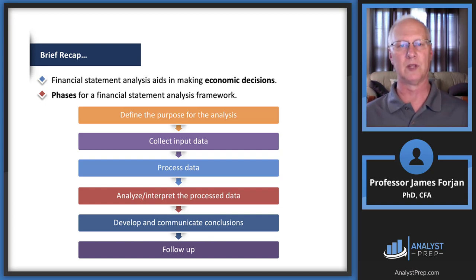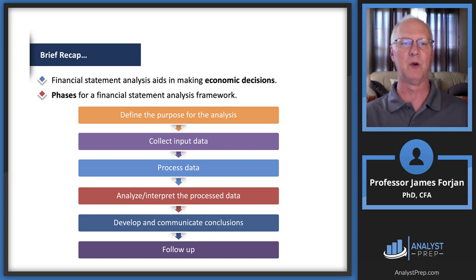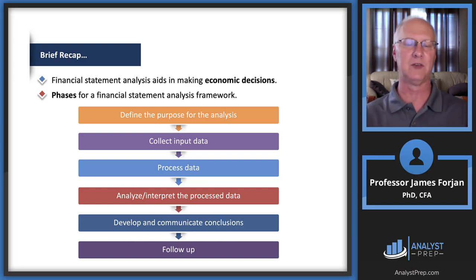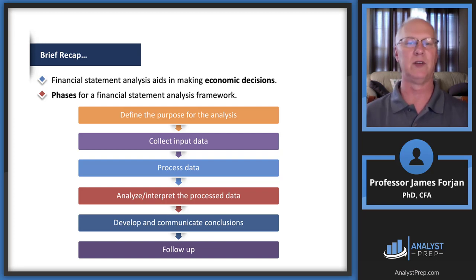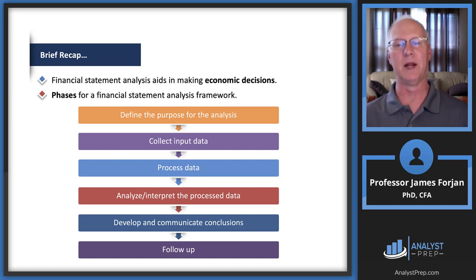We need to worry about default risk, which means we ought to look at all of the stuff on the right-hand side of the balance sheet, plus the left-hand side, plus the income statement, plus the cash flow statement. The phases for a financial statement analysis framework will help us make a decision of whether we should protect the bond using dynamic hedging or any other hedging tool. This process is to find the purpose, collect input data, process data, interpret the data, and then communicate it.